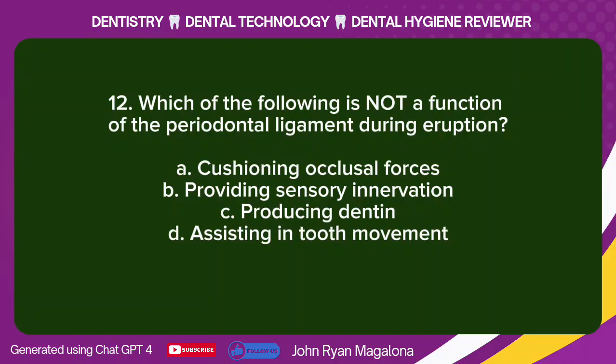Question 12: Which of the following is NOT a function of the periodontal ligament during eruption? A. Cushioning occlusal forces. B. Providing sensory innervation. C. Producing dentin. D. Assisting in tooth movement. Answer: C. Producing dentin.